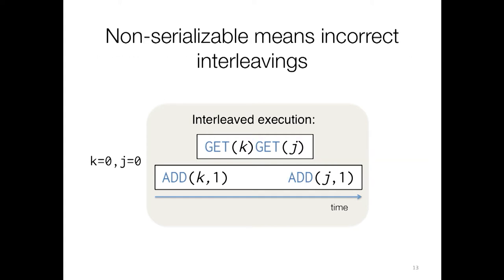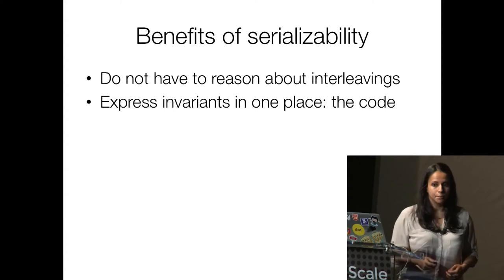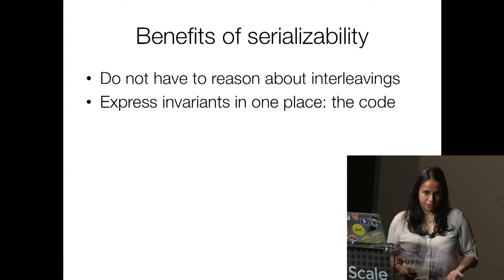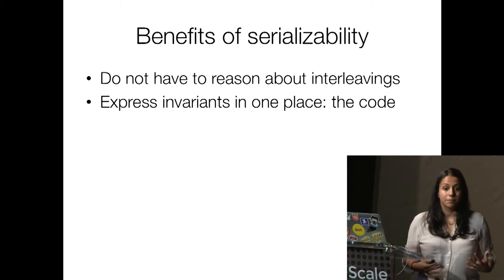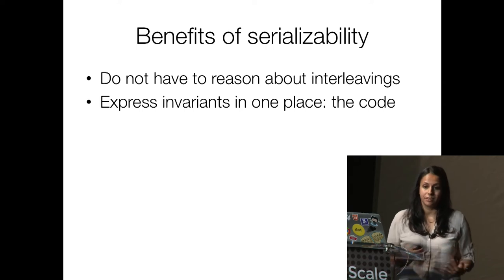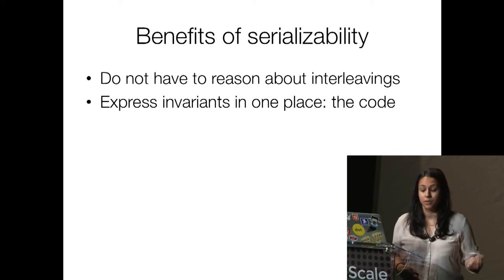Here's an example of an incorrect interleaving of the transactions. What's happening is that the add to K is happening, then we're doing both reads, and then the add to J is happening. Transaction one is returning one and zero, because that's what it sees. This is an incorrect execution — this is not serializable. With a more complex application and more complex application logic, reasoning about transaction interleavings can be really, really difficult — in particular, reasoning about the interleavings of the operations within the transactions.